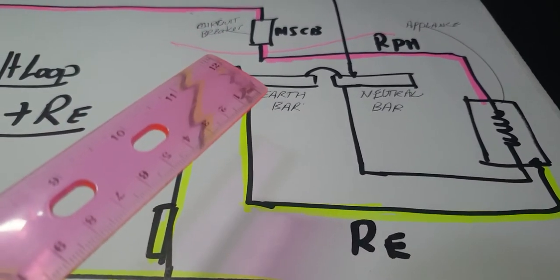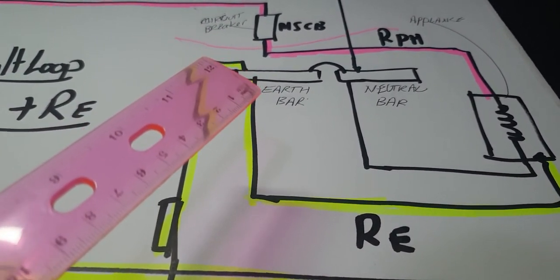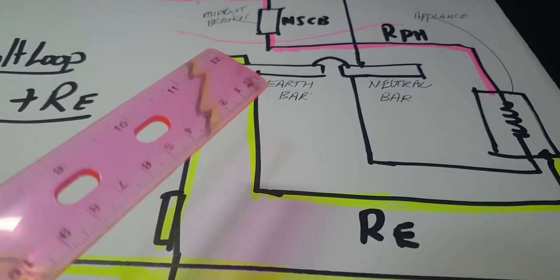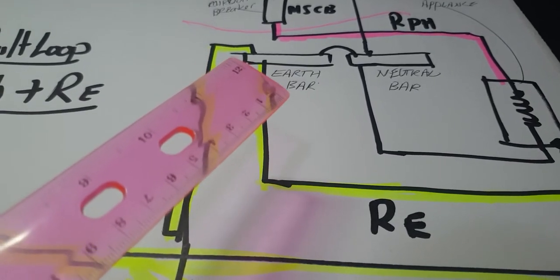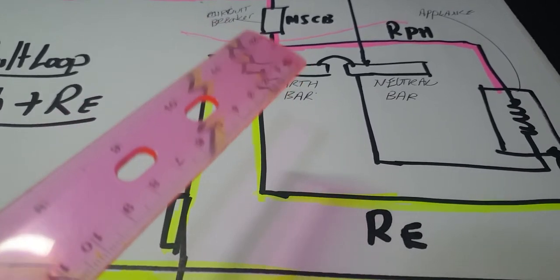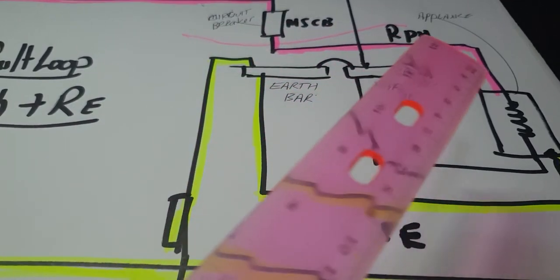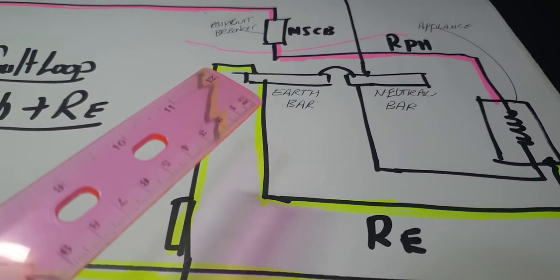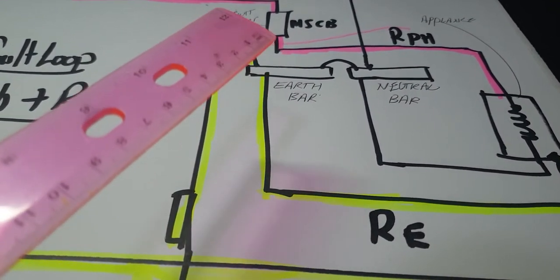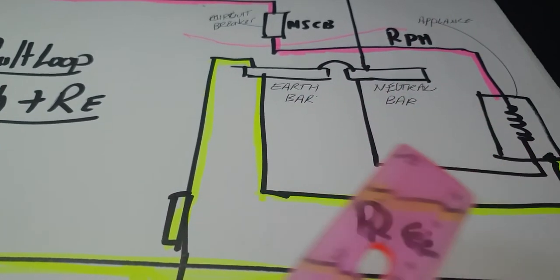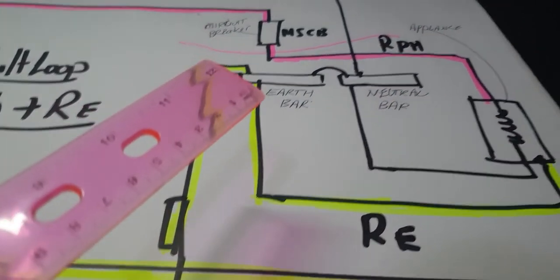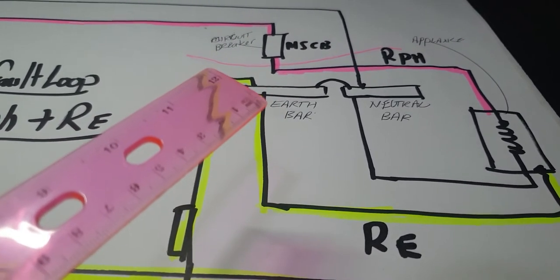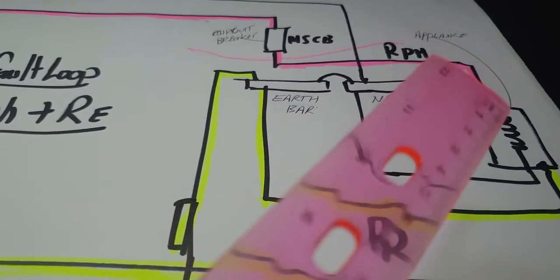That's why we work out the fault loop impedance here. That does change with breakers depending if I got a type B, type C, or type D breaker. On a type D, I've got to have 12 and a half times, where a type B it's only four times. There's a table called 8.1 and 8.2. 8.1 is for a live circuit, 8.2 is for a dead circuit, and that talks about the resistance of the active and the resistance of the earth on those tables.